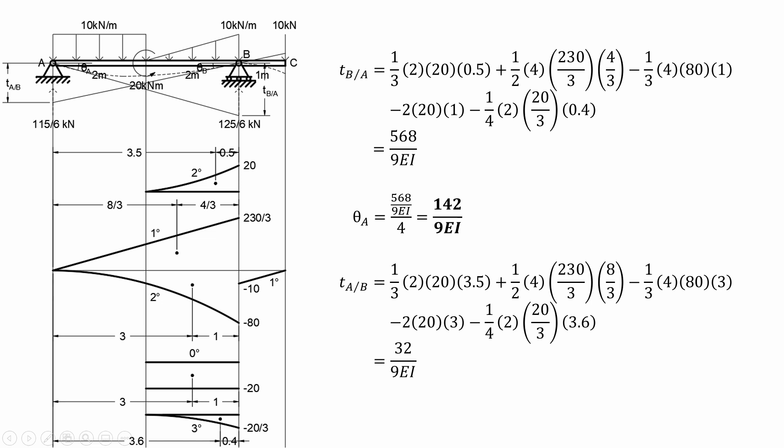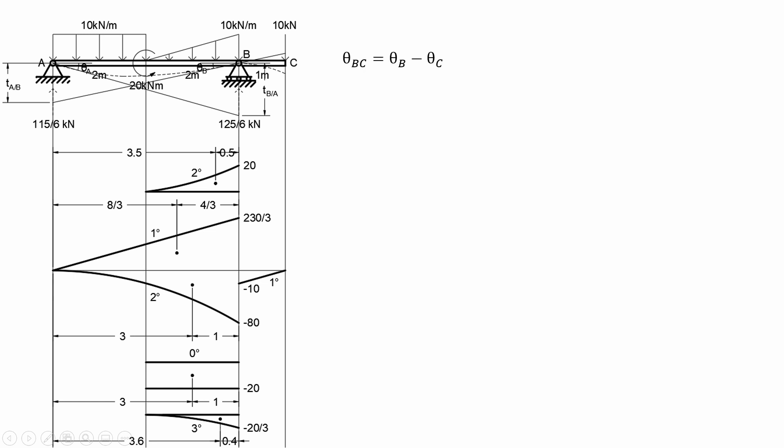Solving for the rotation at B. Using the equation theta BC equals theta B minus theta C, we can solve for the rotation at C. For theta BC, or the change in slope between tangents at B and C, we will only consider this portion and then solve for its area.